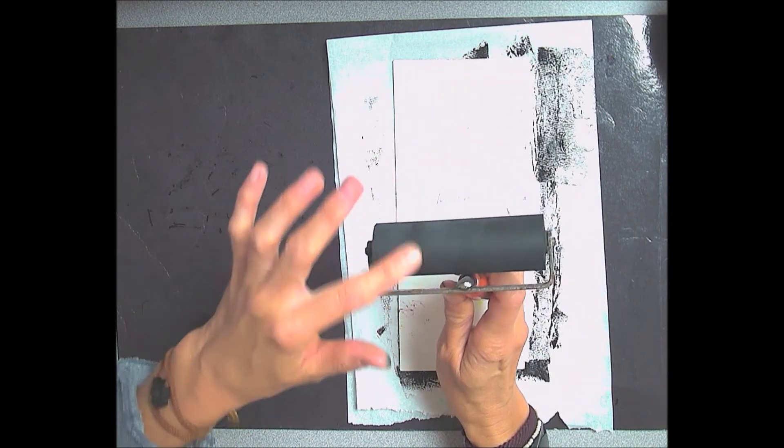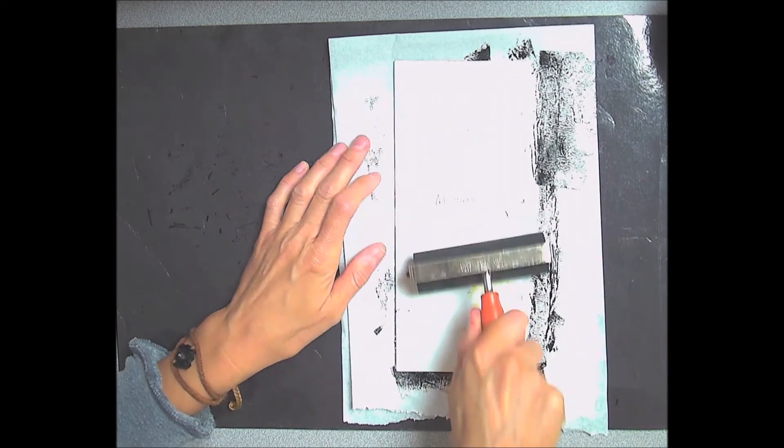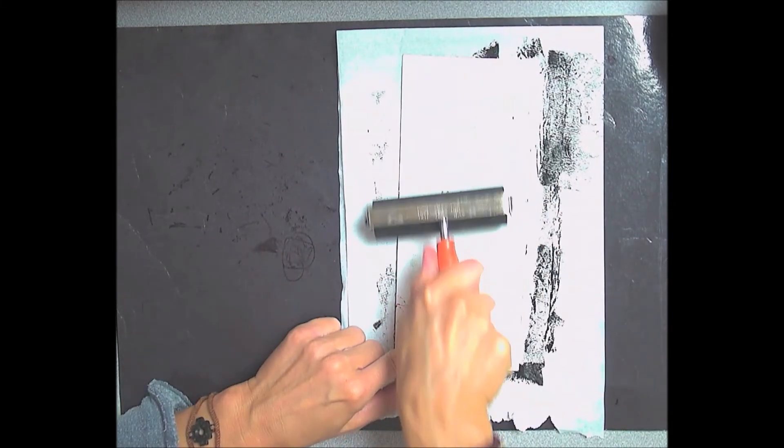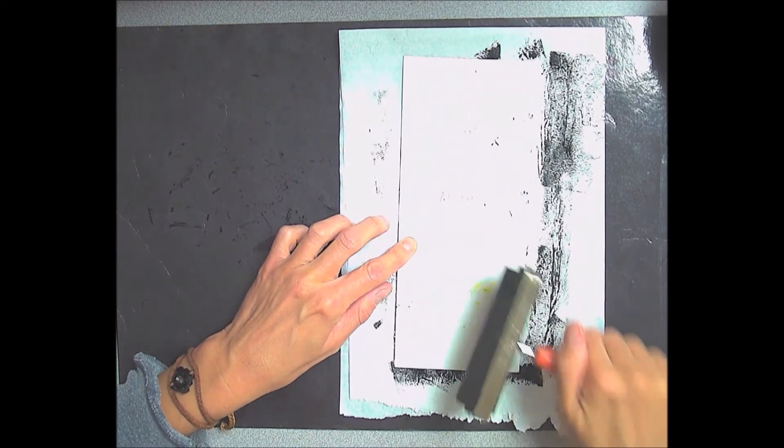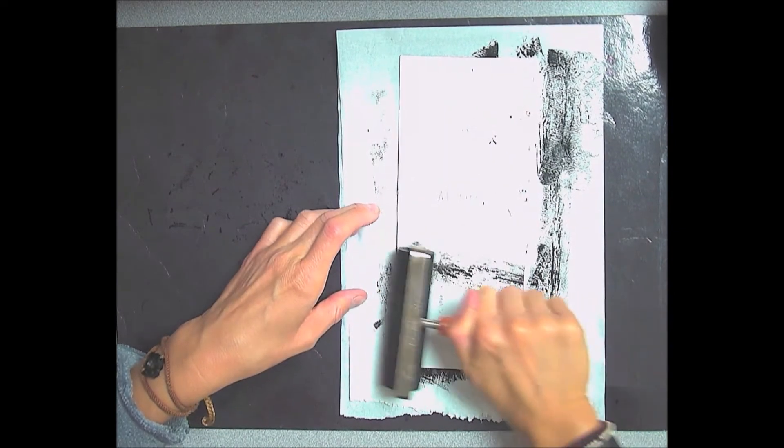Take your second brayer, the clean one, and start pushing really hard to roll it on the back. If you get a little bit of ink on your brayer, that's okay. That's very normal.